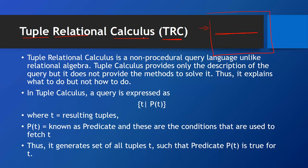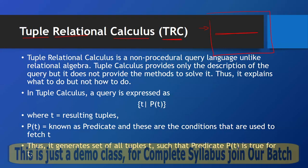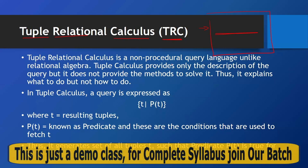Questions can be quite similar to gate-level questions. Tuple relational calculus: tuple is a row, relation is a table, and calculus is the special kind of math you perform on both of these. TRC is a non-procedural query language, unlike relational algebra. Tuple calculus provides only the description of the query but does not provide the method to solve it — it explains what to do but not how to do it.